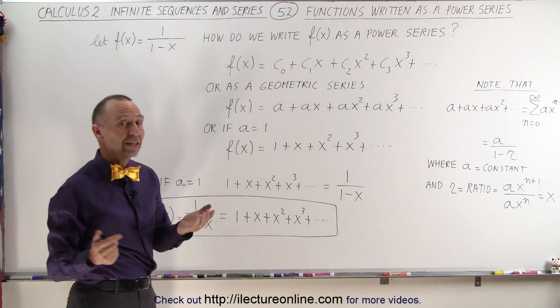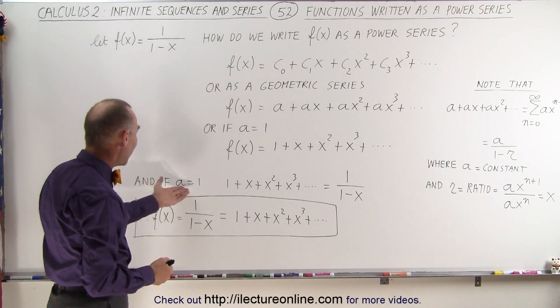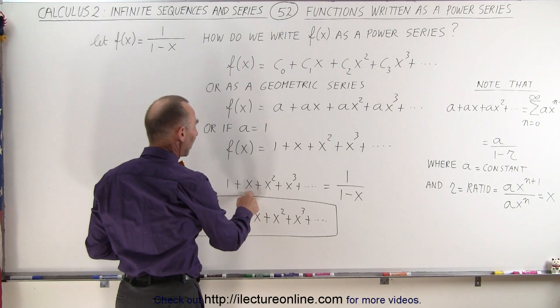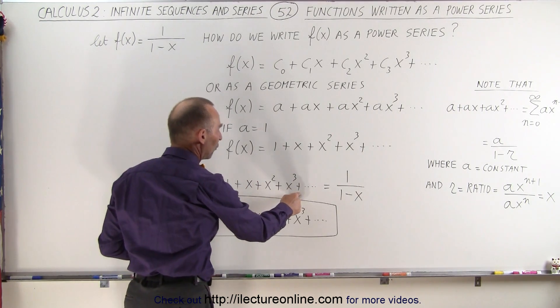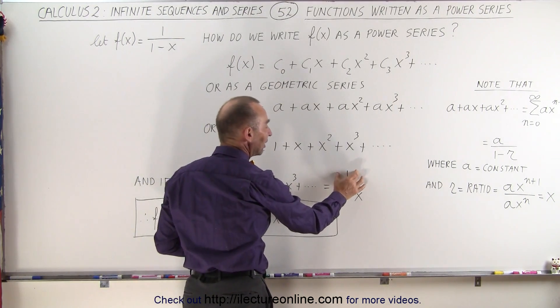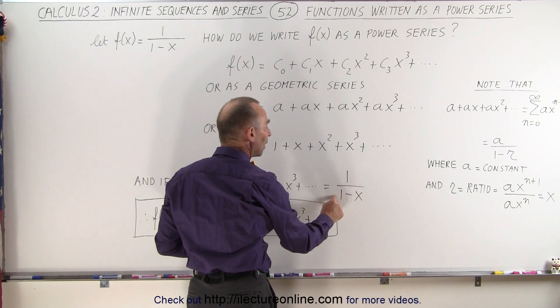Now, what if a is equal to 1? So, if a equals 1, we can then say that 1 + x + x² + x³ and so forth is equal to the constant, in this case 1, divided by 1 minus x,